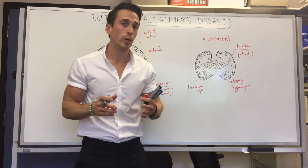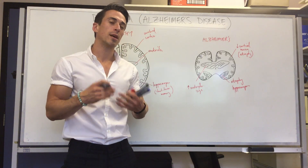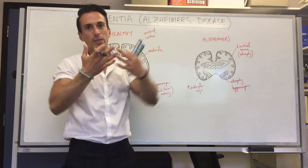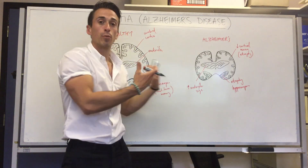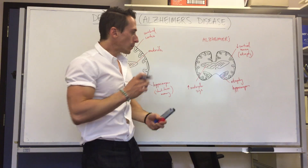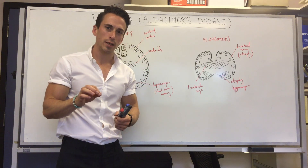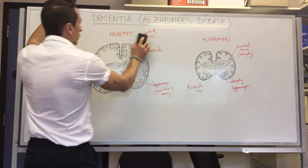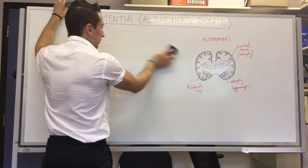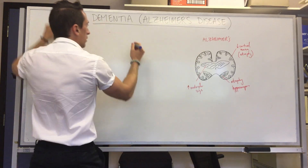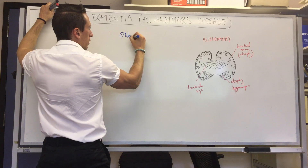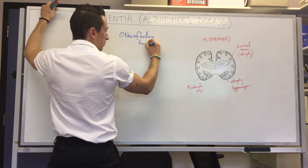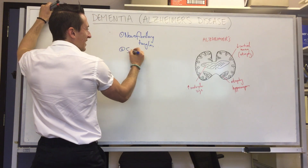The question is why does this happen — and the honest answer is we don't really know. There are some underlying genetic causes and some environmental causes, and it is predominantly an interaction between the two. Looking at the pathology, two important things are seen: neurofibrillary tangles and senile plaques.